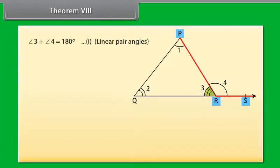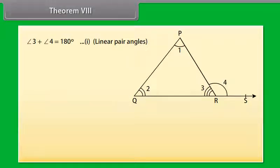Is angle 3 plus angle 4 equal to 180 degrees? Yes. Angle 3 plus angle 4 is 180 degrees because these are linear pair angles. Mark it as equation 1.